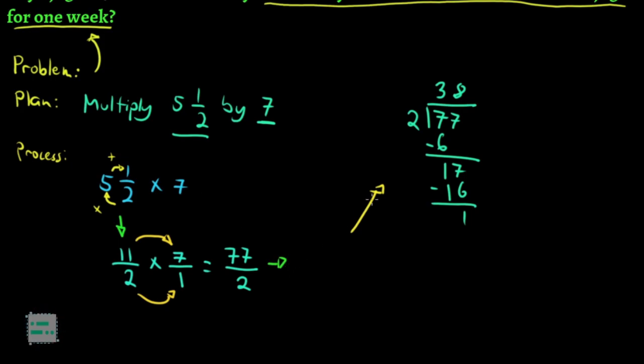Yung whole part mo yun ang iyong quotient kasi siya yung nabuo. Siya yung bilang ng 2 na meron sa 77. Talagay natin 38.